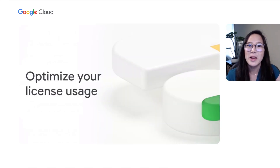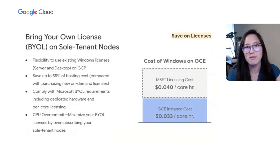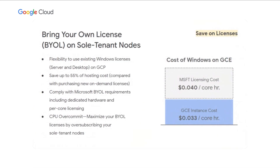For those migrating traditional enterprise workloads to the cloud, Google offers tools to help you reduce costs and optimize your existing licenses. One way to save on licenses is to bring your own license. A vast majority of customers with enterprise agreements own perpetual licenses that can be brought over to Google, giving them the flexibility to use existing licenses instead of repurchasing them on GCP. We call this bring your own license, or BYOL, on sole tenant nodes, which can save you up to 55%.